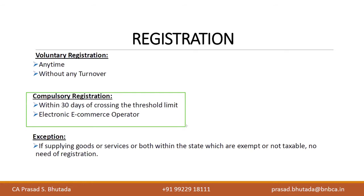If you are an e-commerce operator — like Amazon, which is a platform for other sellers — you must compulsorily register under GST irrespective of your turnover, from the first day itself. However, if you own a website or platform where you sell only your own goods, this rule does not apply. The compulsory registration applies only when you provide a platform for others to sell. There are additional compliances for e-commerce operators not covered in this basic session.